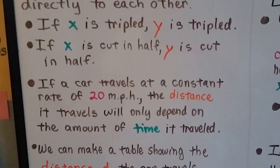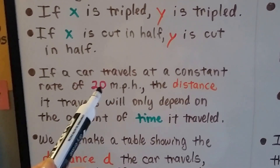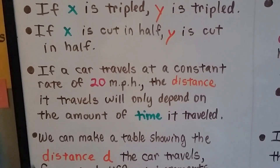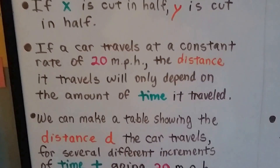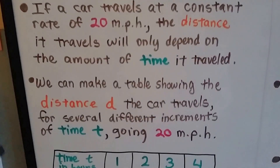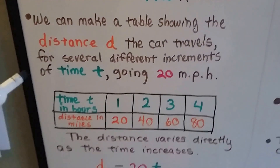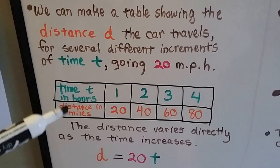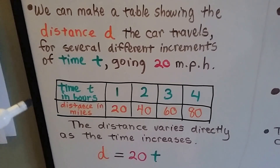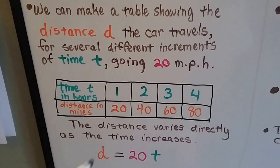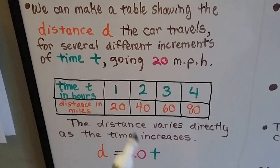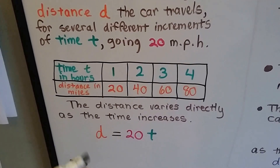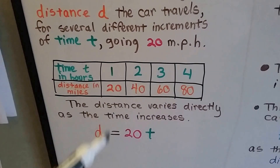So if a car travels at a constant rate of 20 miles per hour, it doesn't change. The distance it travels is going to depend on the amount of time it traveled. We can make a table showing the distance d that the car travels for several different increments of time. After one hour it would be 20 miles, two hours it would be 40, and so on. That distance directly varies as the time increases.